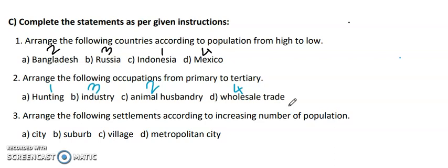Village has less population. If there's a metropolitan city then there is more population. So you have to arrange it in the increasing number.